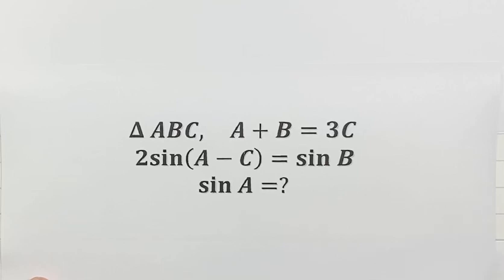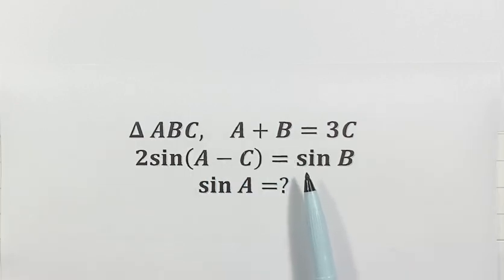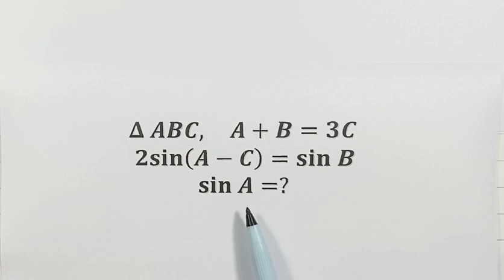This question is from the 2023 Chinese College Entrance Exam. For a given triangle ABC, it satisfies two conditions. The question asks: what is the sine of A? Let's solve this step by step.